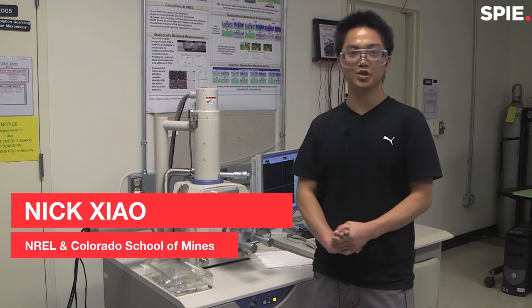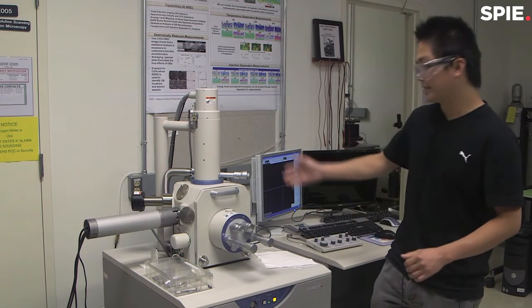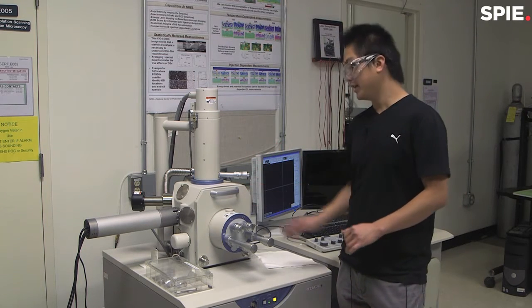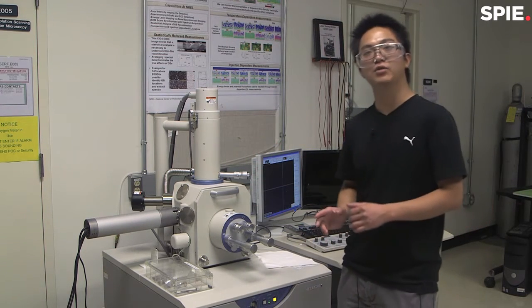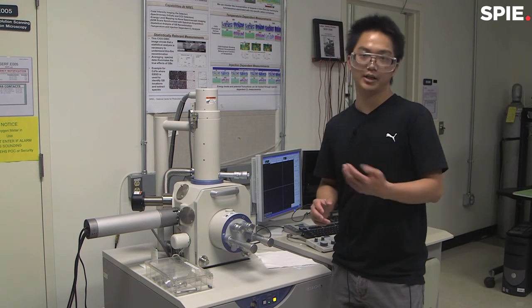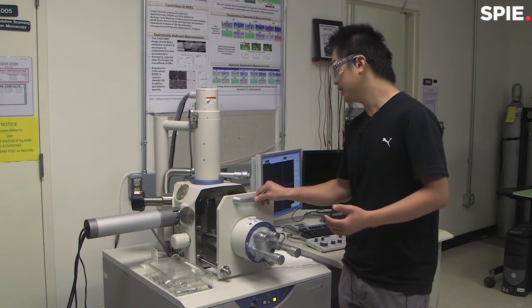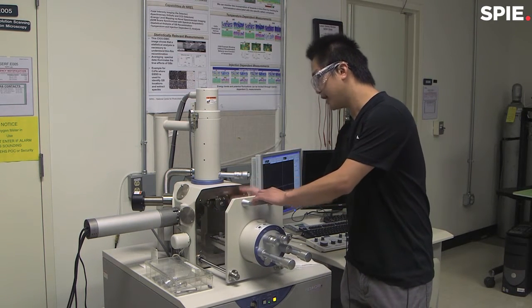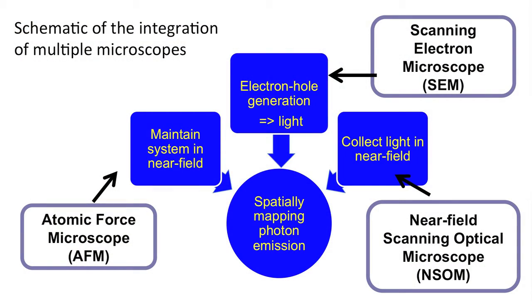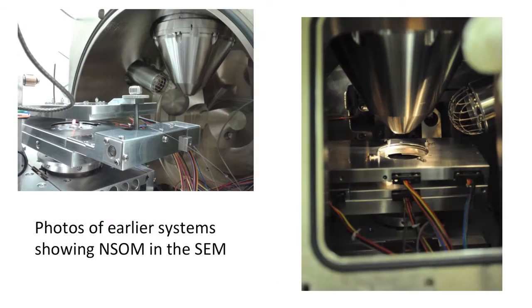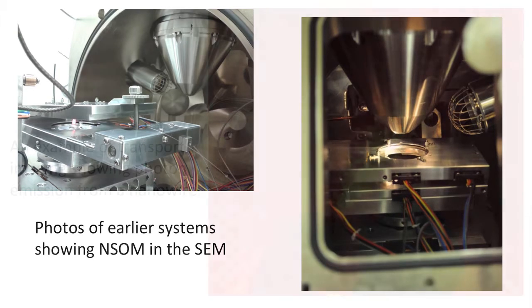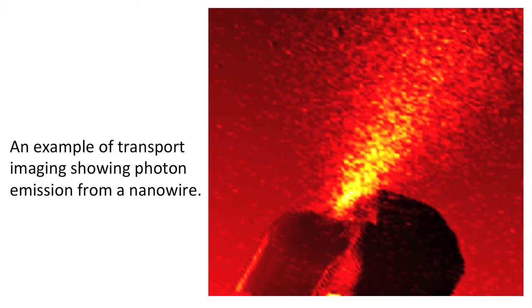Hello everyone, my name is Nick Xiao. I'm a graduate student at Colorado School of Mines doing research at NREL. Here is an SEM — scanning electron microscope — equipment. We normally use SEM to take high-resolution images of semiconductors and other materials. Now we are going to put our NSOM scanner inside this SEM chamber. The electron beam is going to generate carriers, the light is going to emit from the semiconductor, and our NSOM scanner is going to scan over and take very high resolution transport images.